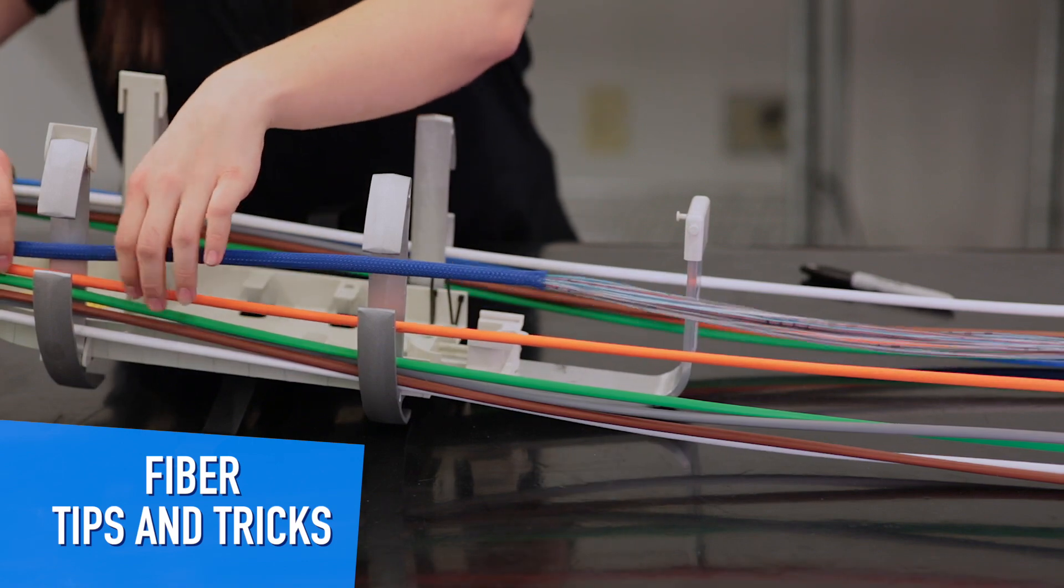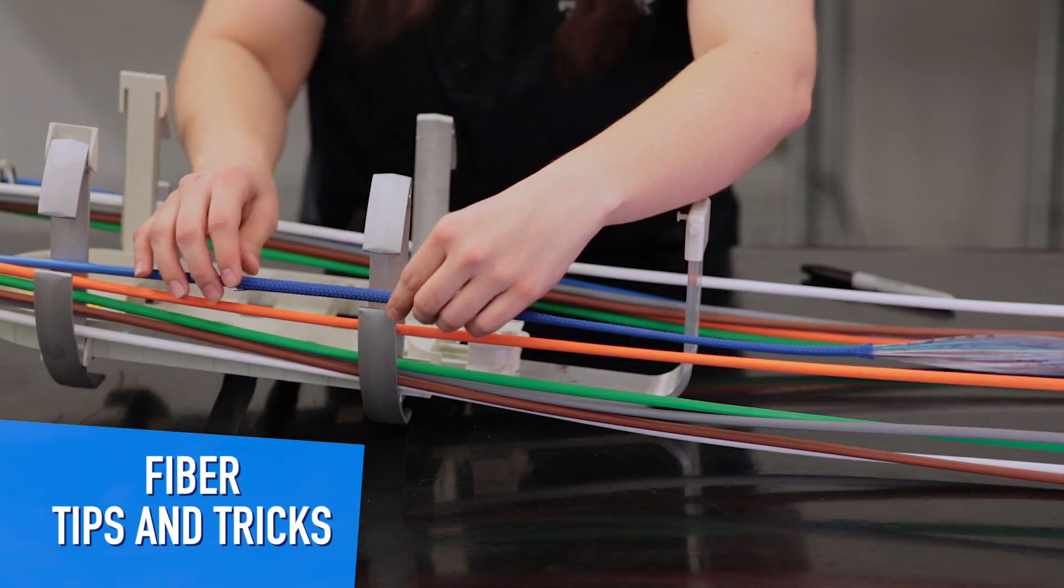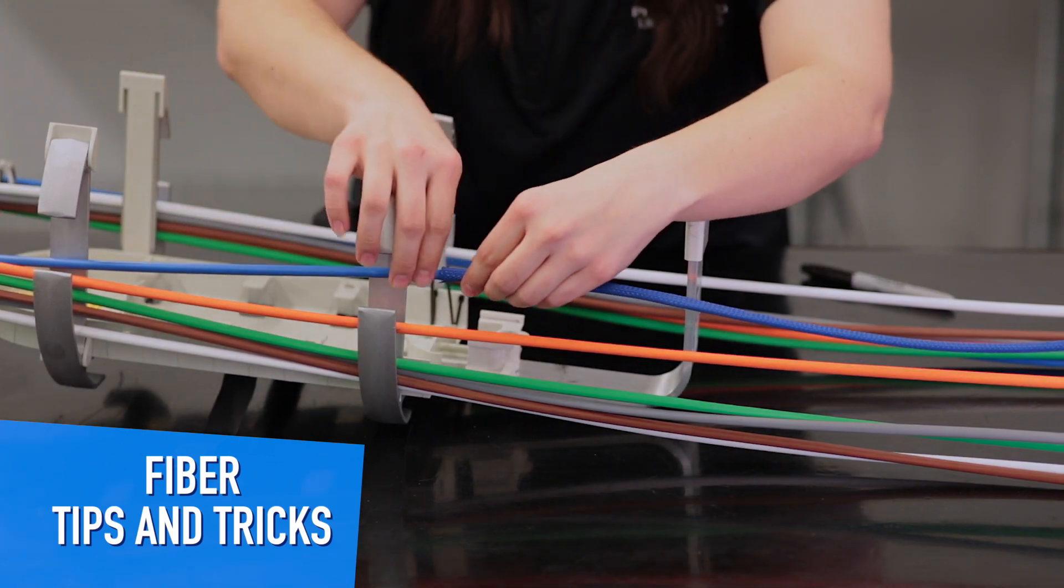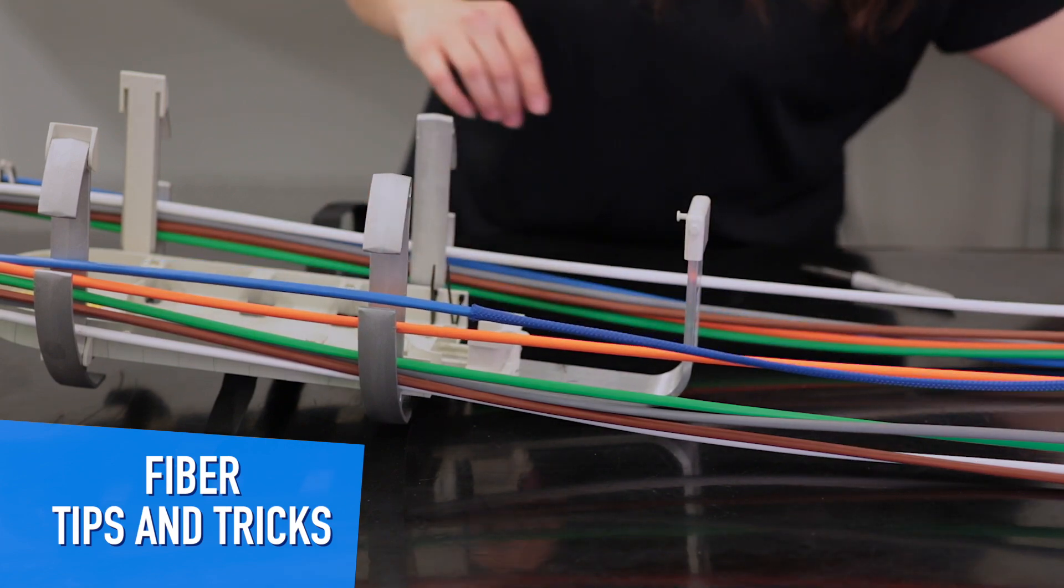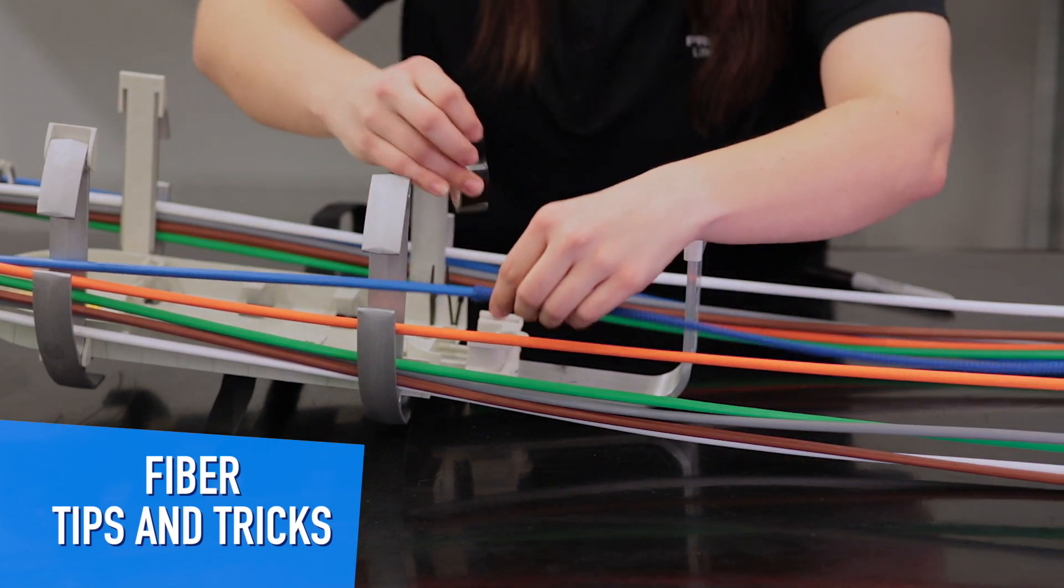Slide the braided sleeving over the exposed fiber, leaving an inch of buffer tube underneath the end of the braided sleeving. Secure the braided sleeving with vinyl tape to the buffer tube.